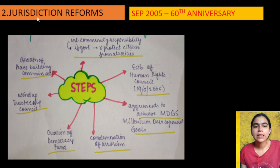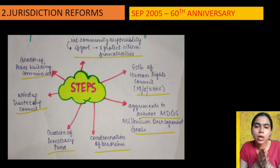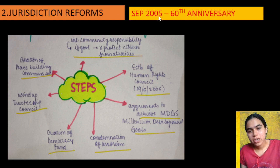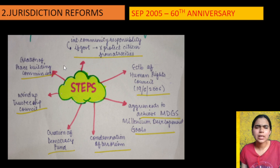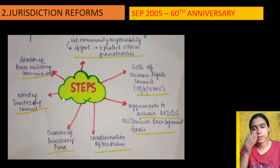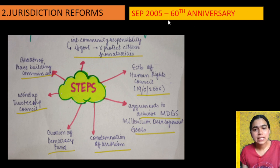Now the second reform — jurisdiction reform. Jurisdiction means how many areas the UN can work in. This change came much later, in 2005. The UN was formed in 1945, so by 2005 it had been 60 years. In September 2005, the 60th anniversary of the United Nations was being celebrated. At this time, it was discussed how the UN's jurisdiction could be expanded, and new things were introduced.